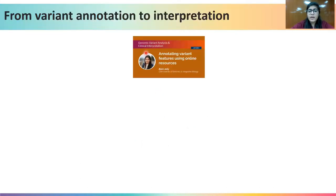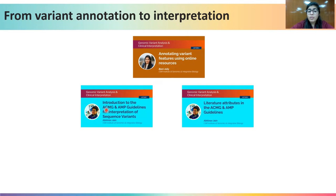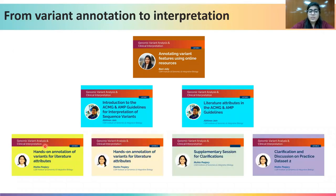So till now, you have learned about how to annotate variant features using online tools. You also know about ACMG and AMP guidelines for interpretation of sequence variants using a few selected examples. And in the last few sessions, you have learned about hands-on annotation of variants for literature attributes, in which you could yourself assign attributes to the variants given in the practice dataset by mining out the relevant publications.